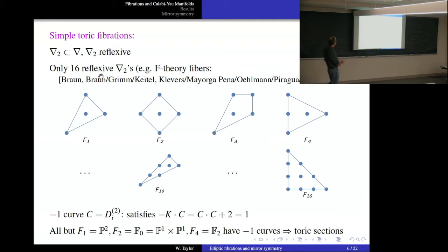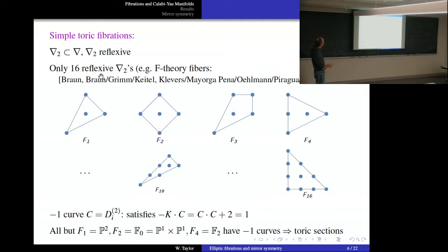We have F1 which is P², F2 which is P¹×P¹, F3 which is Hirzebruch F1, F4 which is Hirzebruch F2 — the blowup of P² we saw a moment ago. F10 is an important one: Hirzebruch surface P²₃₁. There's also the dual of F1. When we have a genus-one fibration where ∇₂ is a sub-polytope of ∇, it means there's a projection which projects ∇₂ to zero, and that projection will project onto some toric base. An anti-canonical hypersurface in a reflexive 2-polytope is just an elliptic curve.